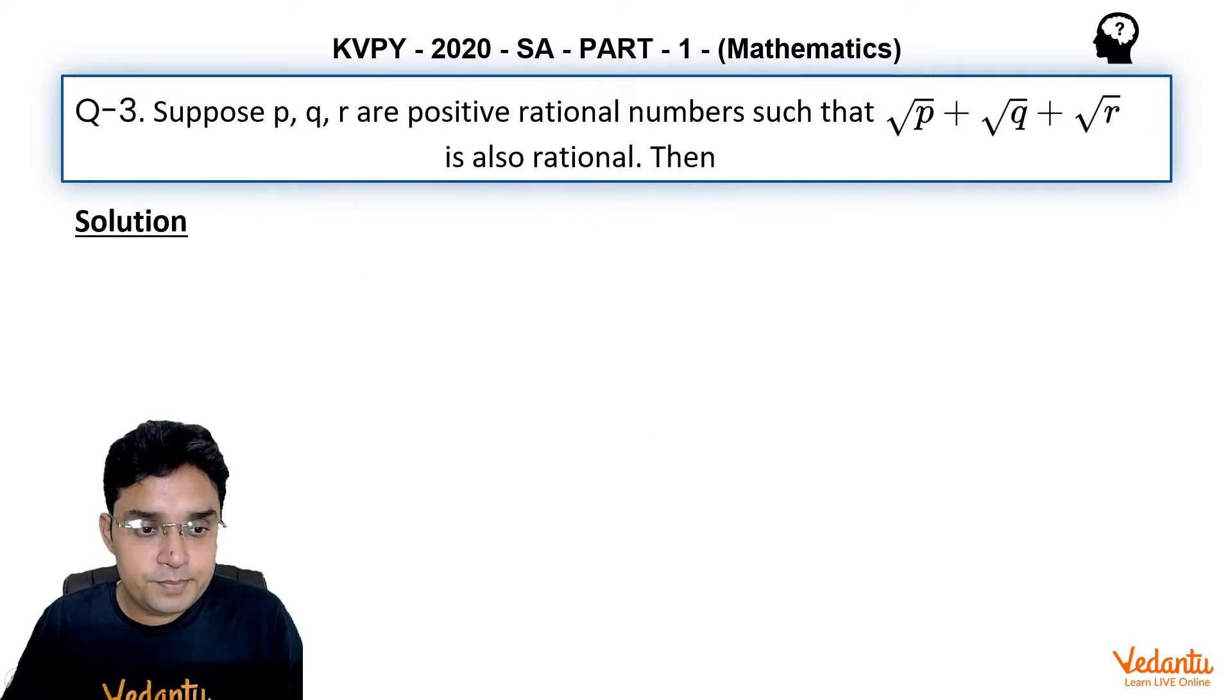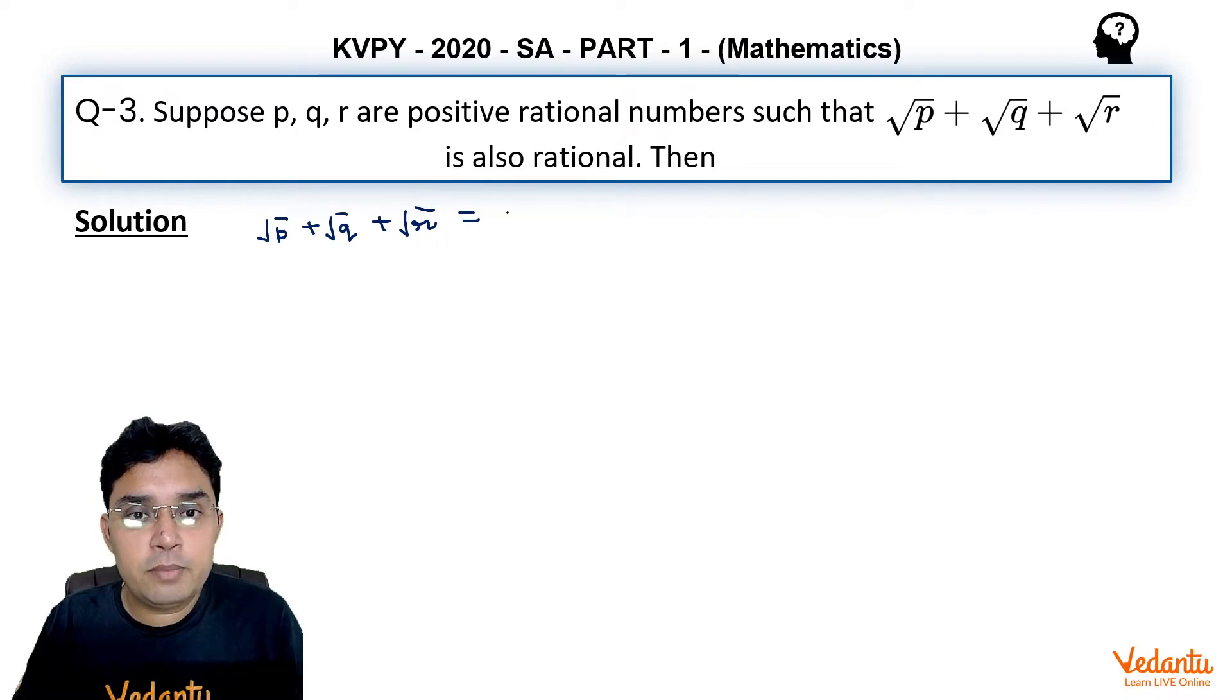Now to solve this question, one very simple thing we need to do. First, let us assume that √p + √q + √r equals some rational number, let's say α.